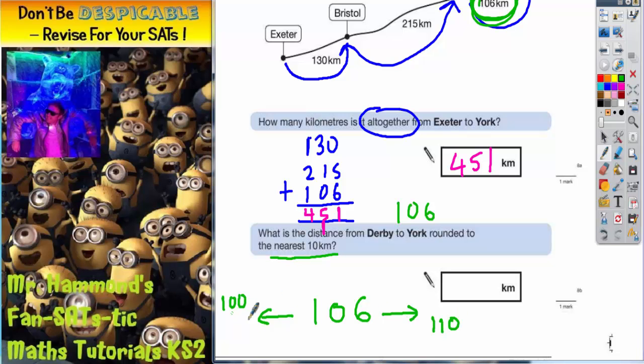So the question is which one of these to the nearest 10 is 106 closest to? Well halfway between these two would be 105 and seeing as 106 is above that because it's above 105 that means we are going to round up to 110.